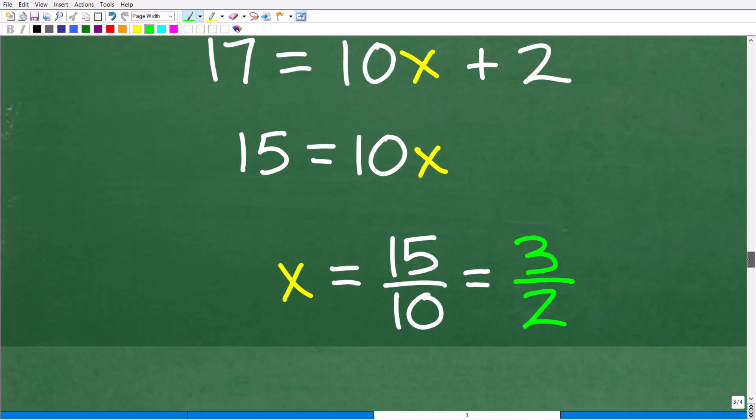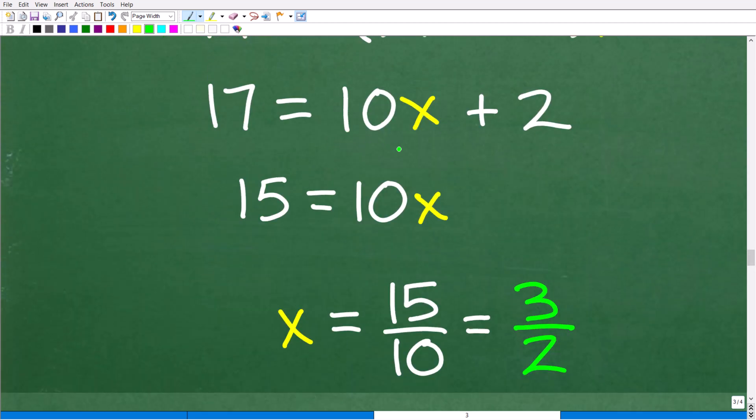So, now let's go ahead and solve for x. So, we'll go ahead and subtract both sides of the equation by 10. Oops, not both sides of the equation by 10x. I'm going to subtract this 2, excuse me, on both sides of the equation. So, now I have 15 is equal to 10x, and to solve for x, all I have to do is divide both sides of the equation by 10. So, x will be equal to 15 over 10, and I could reduce this fraction, and x is equal to 3 halves.